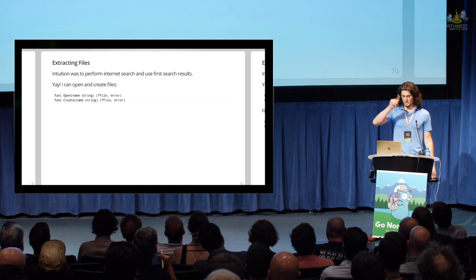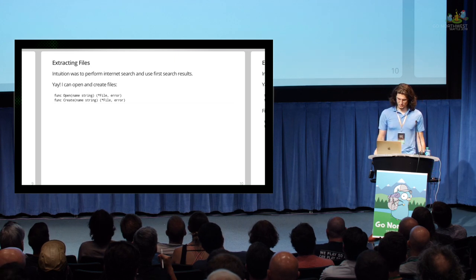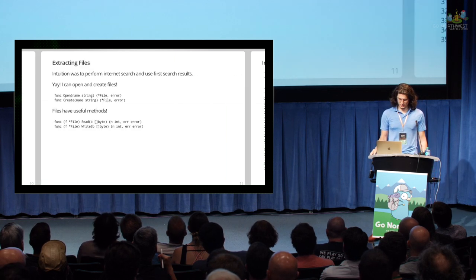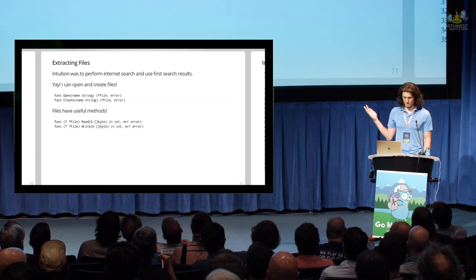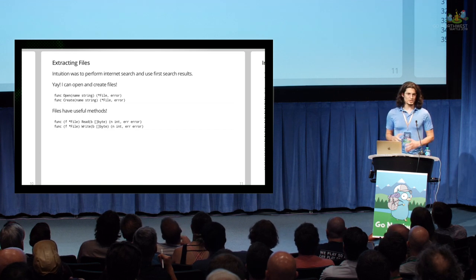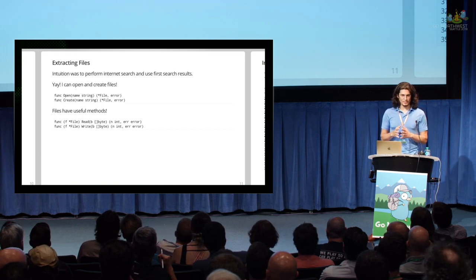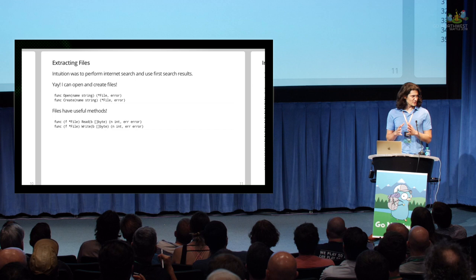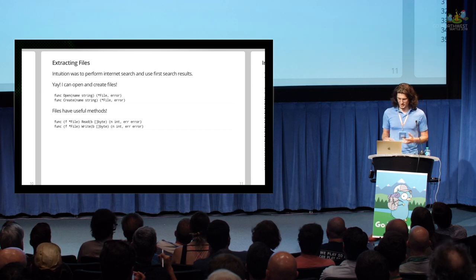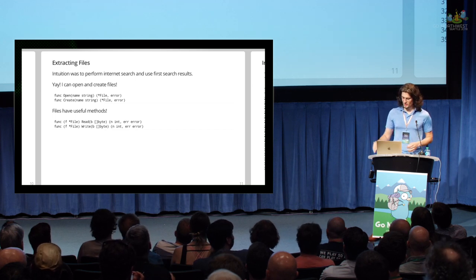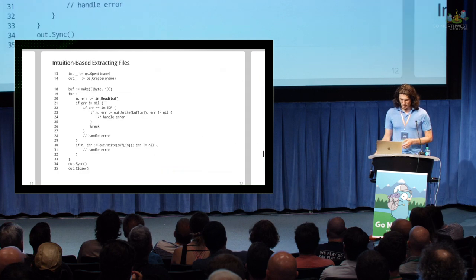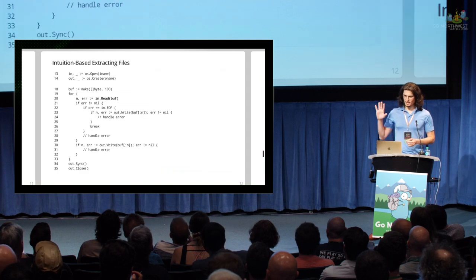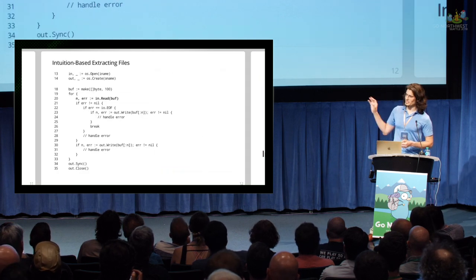I clicked on the documentation and went down to the methods on the file handle. I saw it's got a read and it's got a write. I think I can solve my problem with these functions. So I set out and started writing code — more and more code. The content here is probably not correct, there's probably bugs in here, but I would not do it this way. This is what my intuition led me to do.